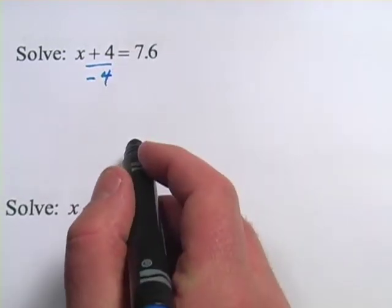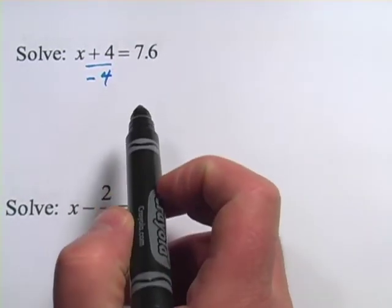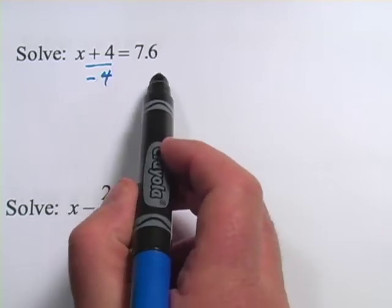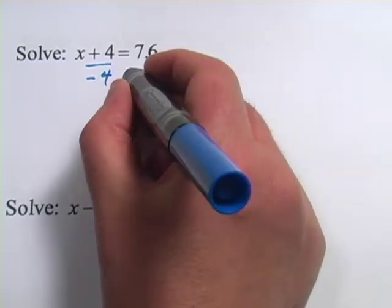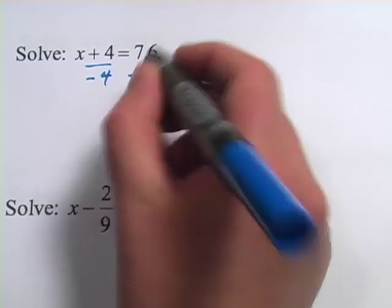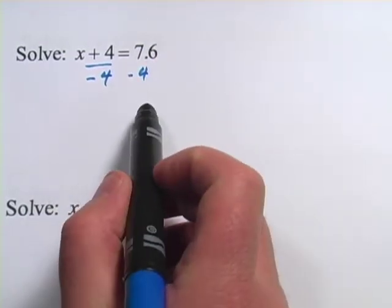So that's the first step, do the opposite. But the rules of algebra say whatever you do to one side of the equal sign, you have to do to the other side of the equal sign. So we're going to subtract 4 from that side too.